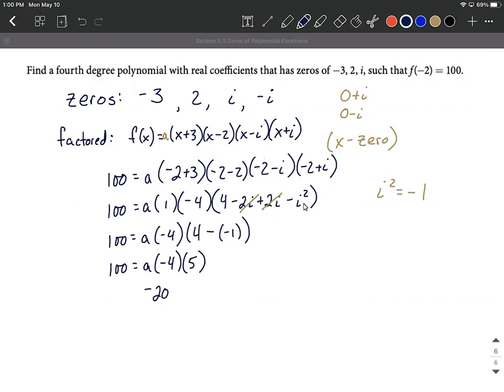We have negative 20a equals 100. To get a by itself we'll divide by negative 20. So a equals negative five.